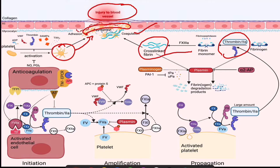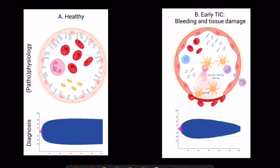In normal conditions, anticoagulation and fibrinolytic processes limit excessive clot formation to maintain vascular patency. On the left you see the normal endothelial cell function, which limits spontaneous coagulation processes from occurring.